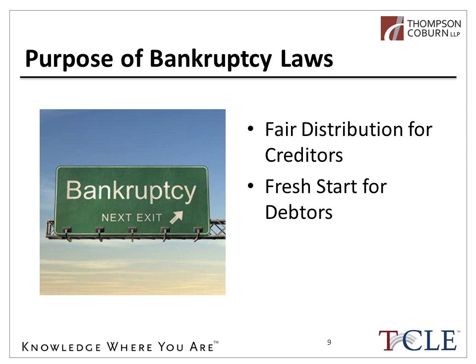How are bankruptcy's basic goals achieved? The bankruptcy laws allow a debtor the opportunity to bring all of its creditors to one forum — the bankruptcy court — to work through that debtor-creditor relationship. As the debtor moves forward in the bankruptcy court under the desired chapter of the bankruptcy code, it's either going to liquidate its non-exempt assets and repay the claims of its creditors with those proceeds, or it's going to continue in possession of its assets, restructure its debts, and pay the pre-filing indebtedness through a plan of reorganization.